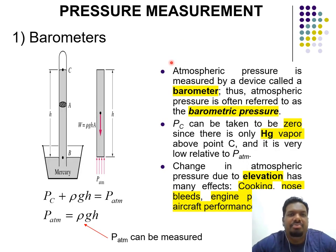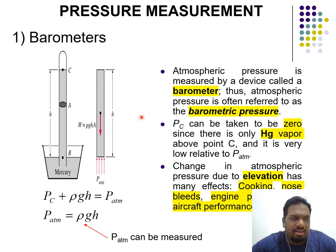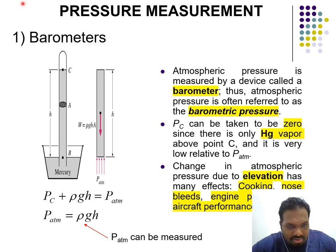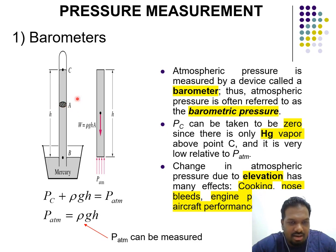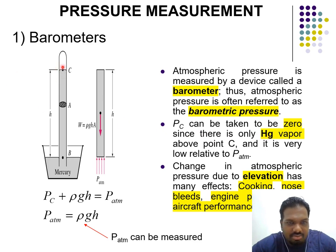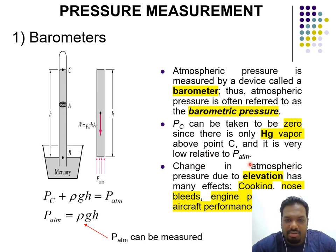Pressure is always measured with many devices. One of the devices we use to measure pressure is called a barometer. Atmospheric pressure is measured using a barometer, so we also call atmospheric pressure 'barometric pressure.' A simple barometer has mercury inside, and based on the movement you can measure the height. Pc can be taken as 0 because the top part contains only mercury vapor, which is very low relative to atmospheric pressure.